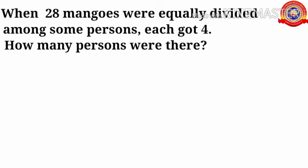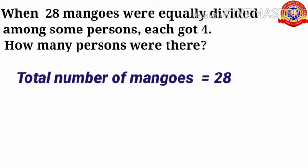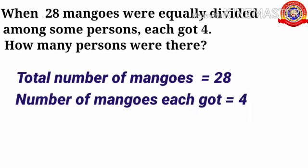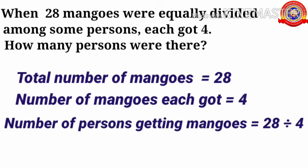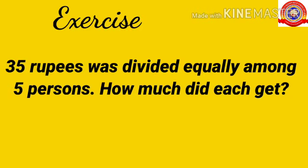Children, see the next question. When 28 mangoes were equally divided among some peasants, each got 4. How many peasants were there? Children, how many mangoes are there in total? Yes, 28 mangoes. Total number of mangoes equals 28. How many mangoes did each get? Yes, 4 mangoes. So, number of mangoes each got equals 4. Here, we need to divide 28 mangoes with 4 each. Number of peasants getting mangoes equals 28 divided by 4. You know 7 fours are 28, so 28 divided by 4 equals 7. There were 7 peasants. You should do this exercise in your rough notes.